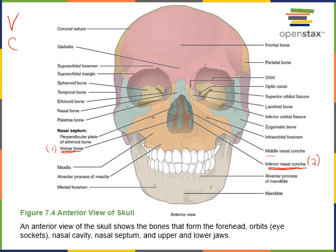N stands for nasal. There are two nasal bones found at the bridge, just superior to the nasal cavity — these are small flat bones. M stands for maxilla. There are two maxillae, two maxillary bones that are the upper jaw bones. Here we can see the right maxilla being pointed at, and then the left maxilla.